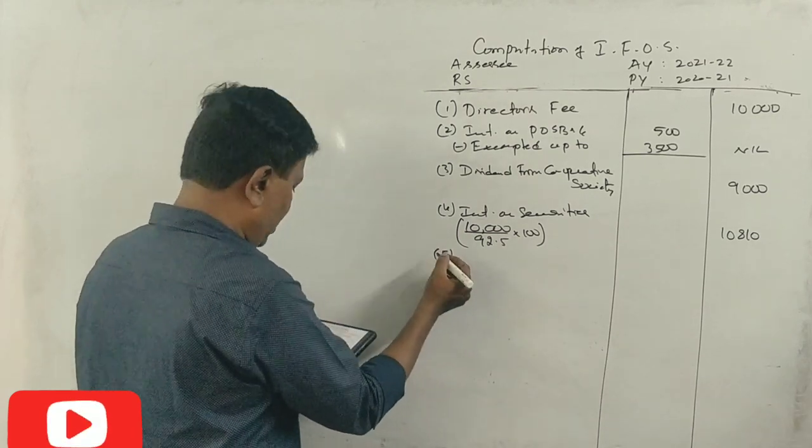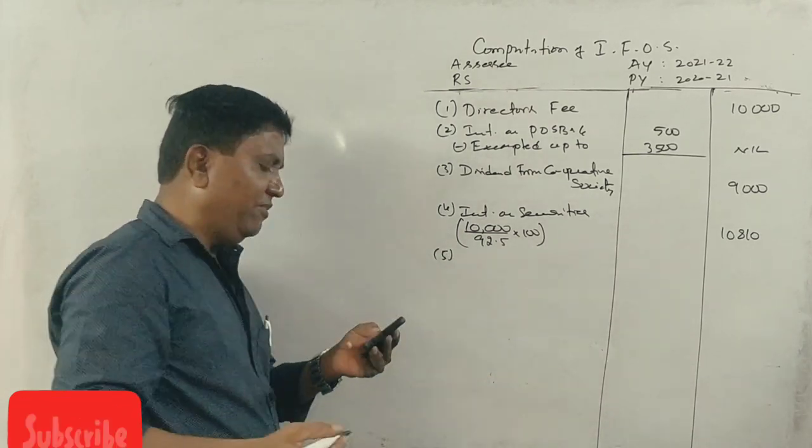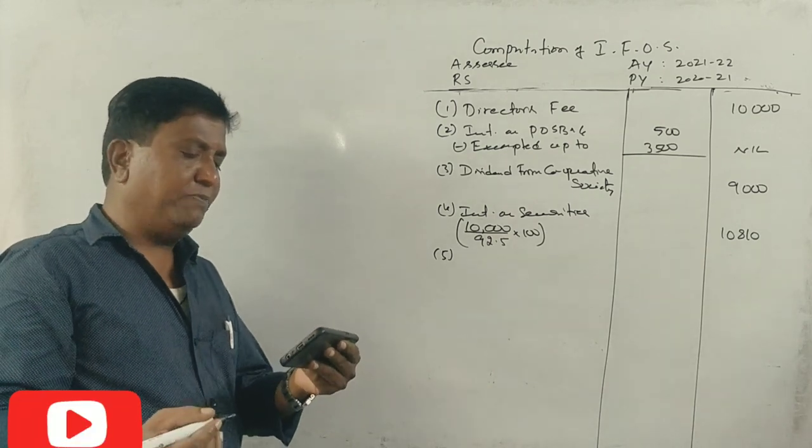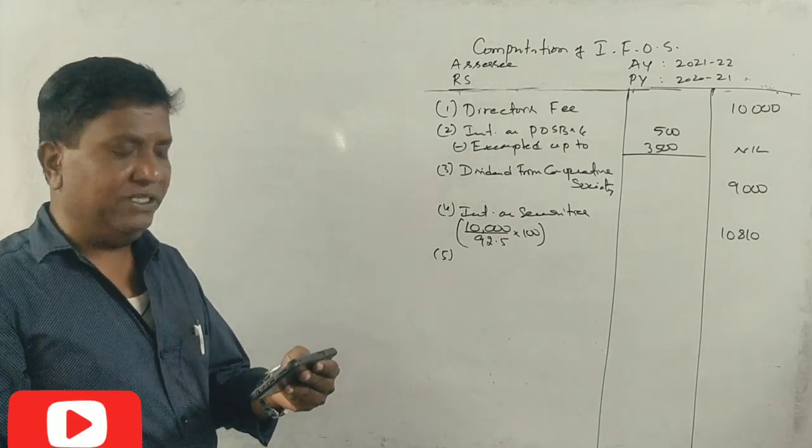Last point, royalty from book written 25,000, expenses incurred for this purpose is 2,500, minus one.